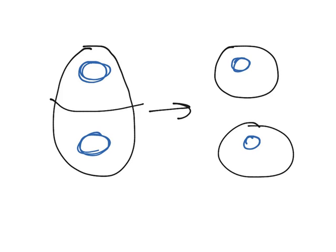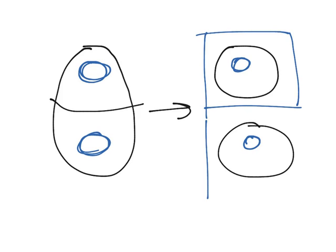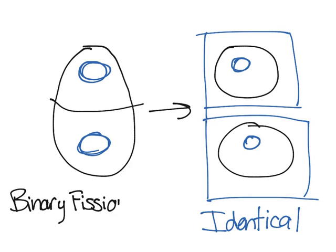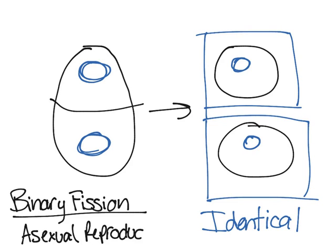One thing to remember: these two cells are identical. Binary fission is a type of asexual reproduction, which means you don't need a mate. The cell itself — the organism — just divides on its own. It doesn't need something else to reproduce with.